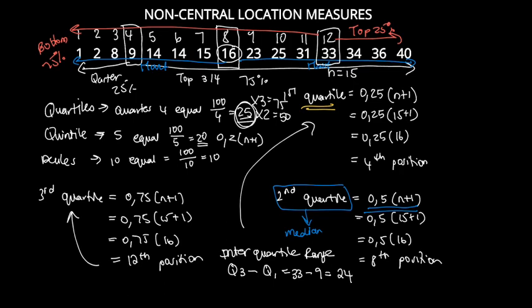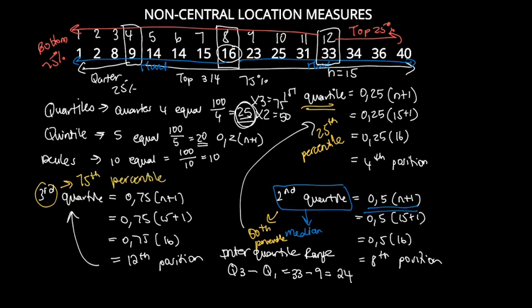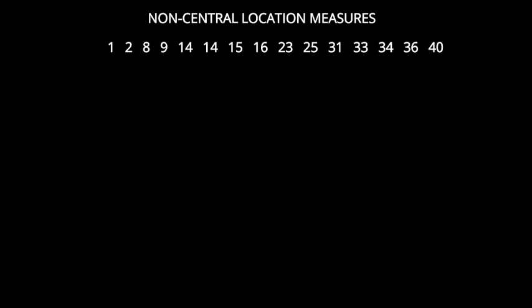These measures also relate to percentiles. The first quartile is the 25th percentile, the second quartile is the 50th percentile, and the third quartile is the 75th percentile of our data set.